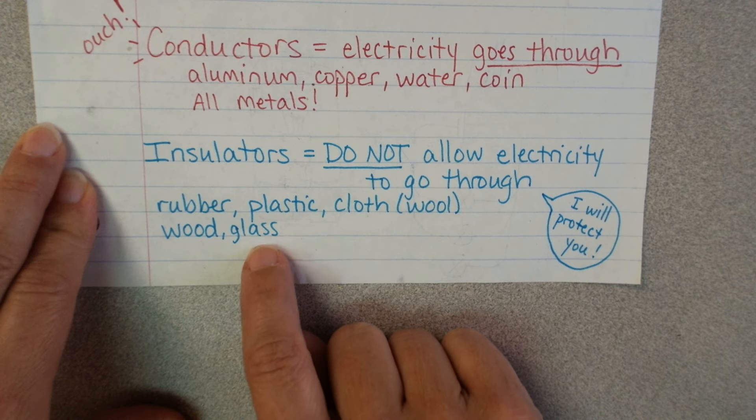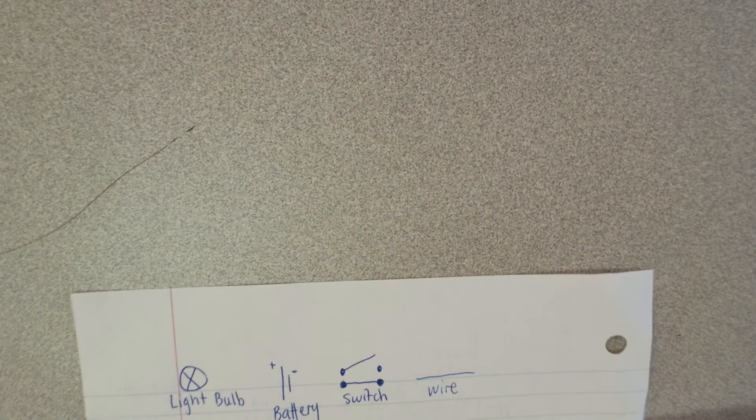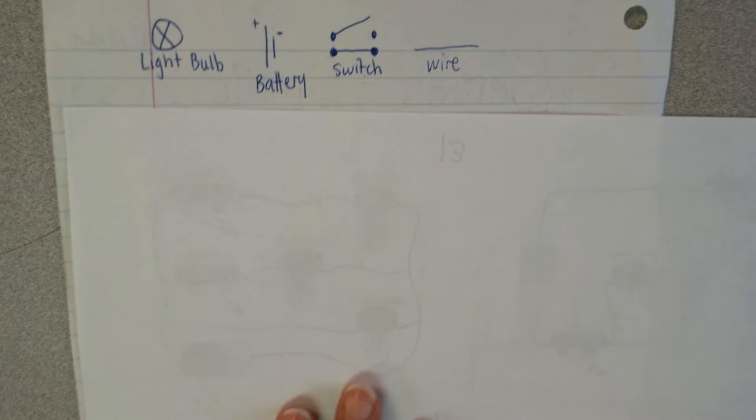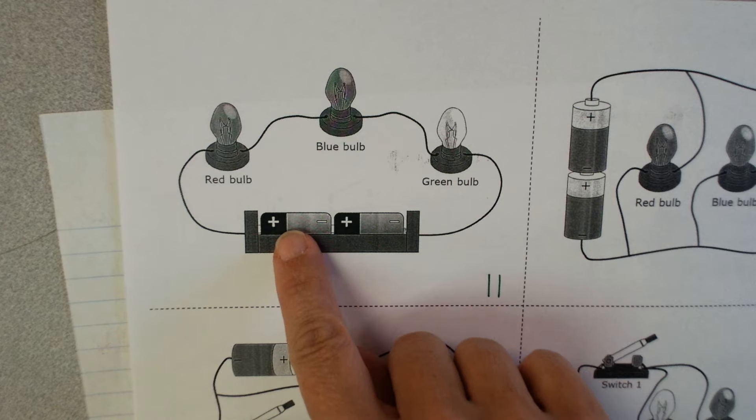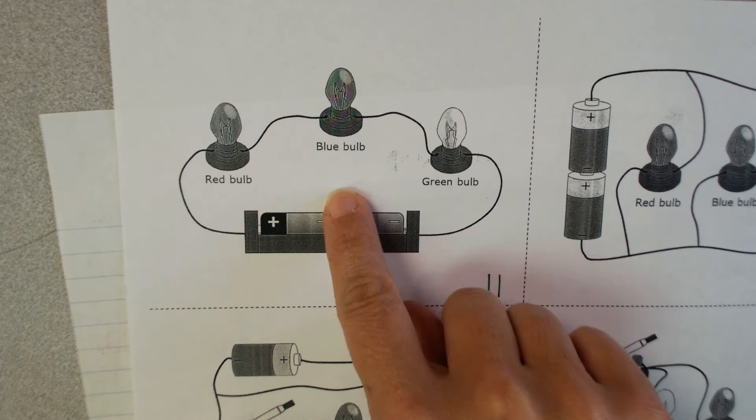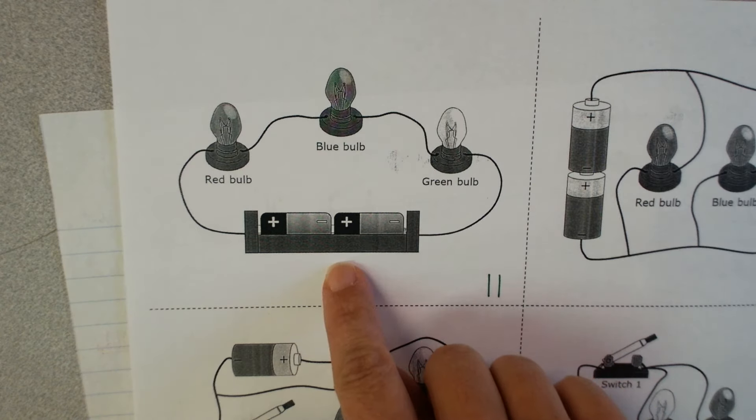Now remember, glass will conduct heat, but it will not conduct electricity. So those are important things to remember. Now, I want to show you some symbols. So we're used to seeing, when we look at a circuit, we're used to seeing this, right? Where we've drawn our batteries, we've got our cute little light bulbs and our wires all connected.